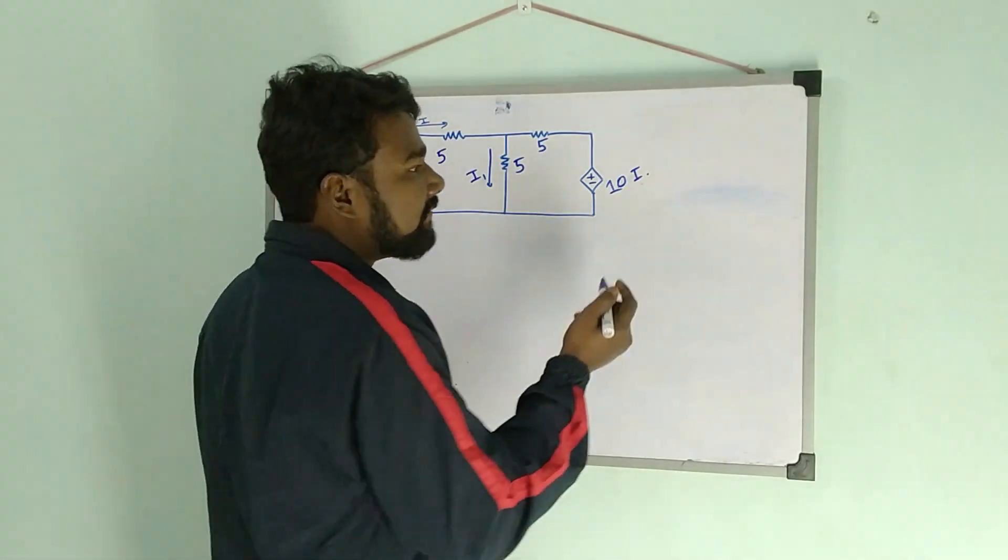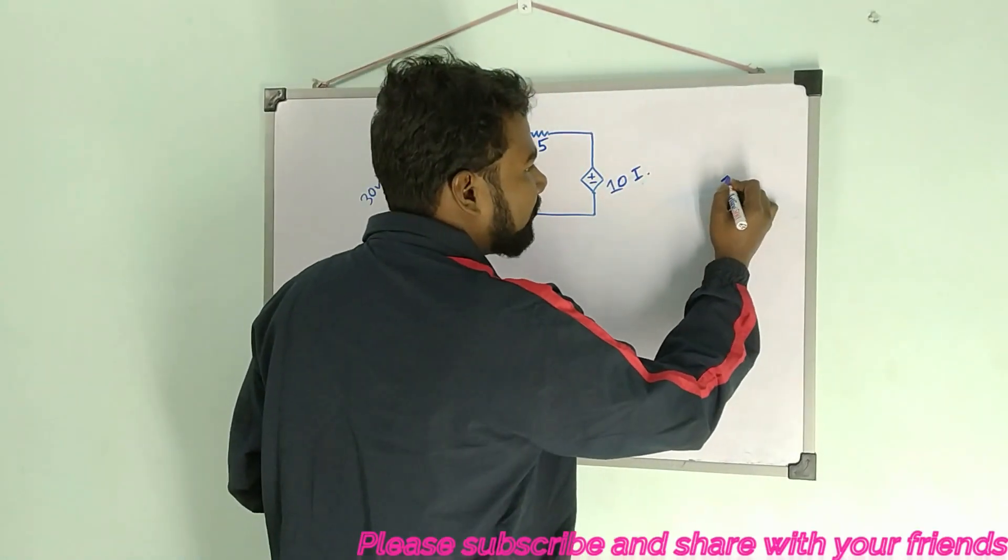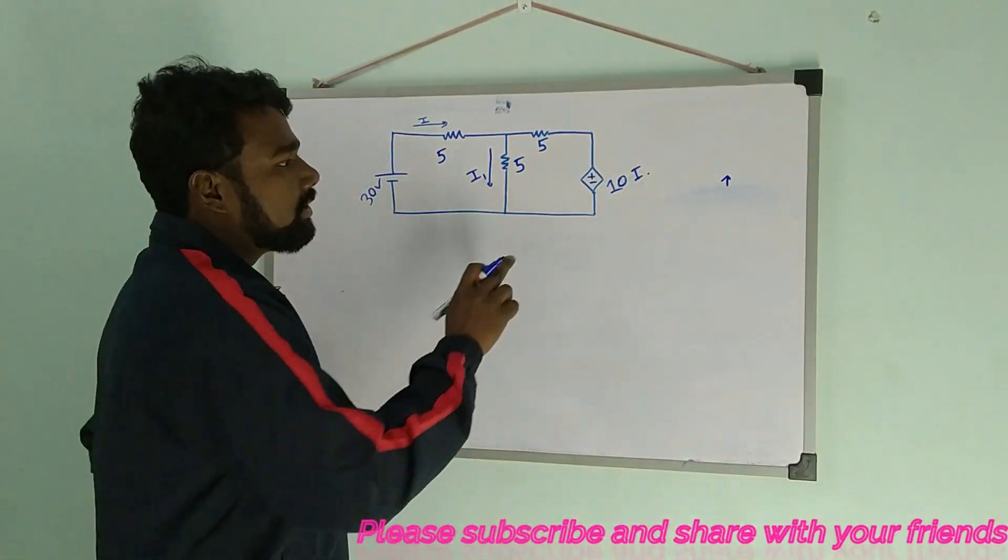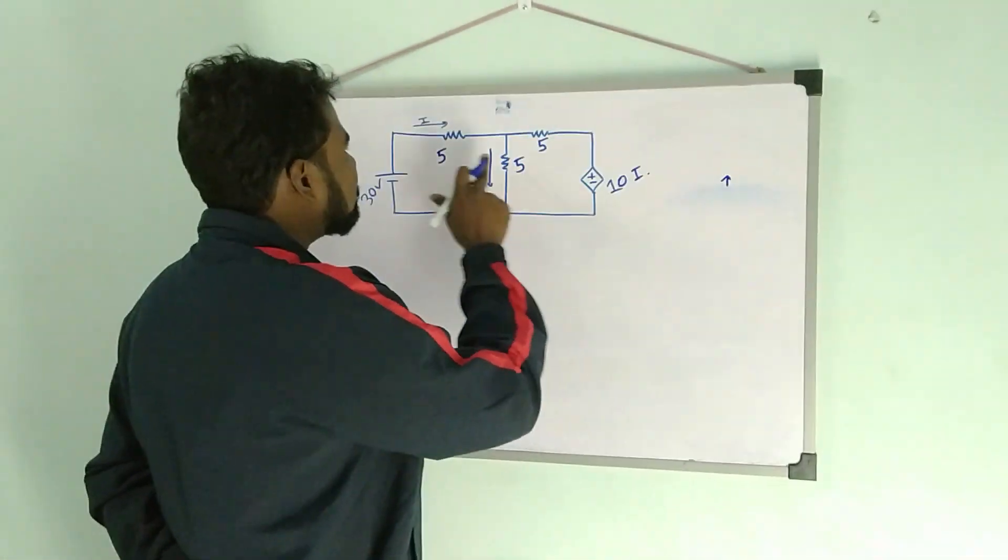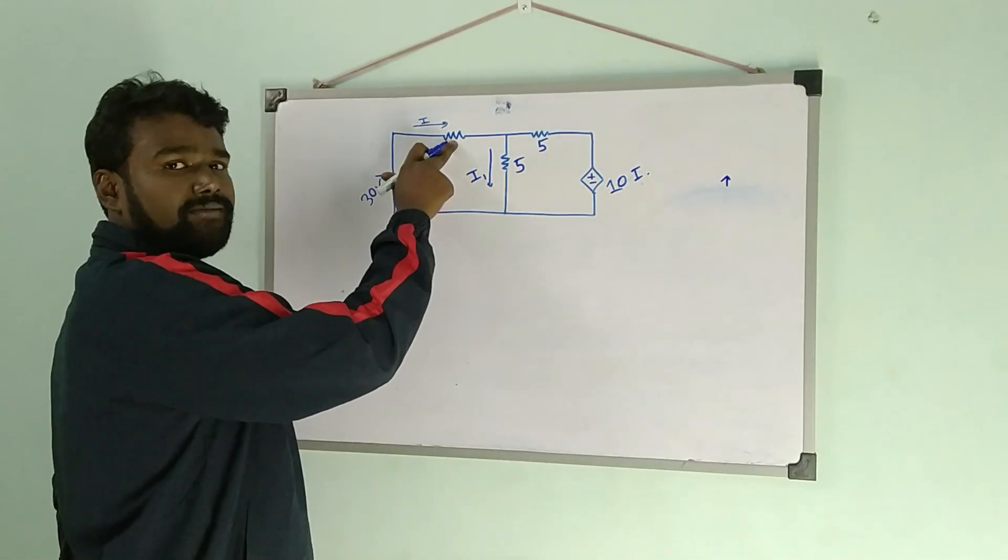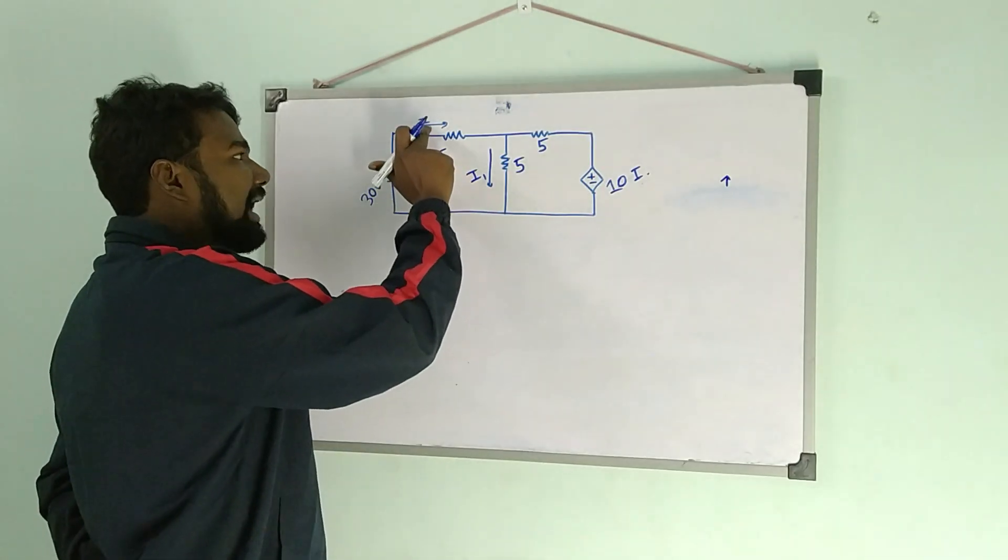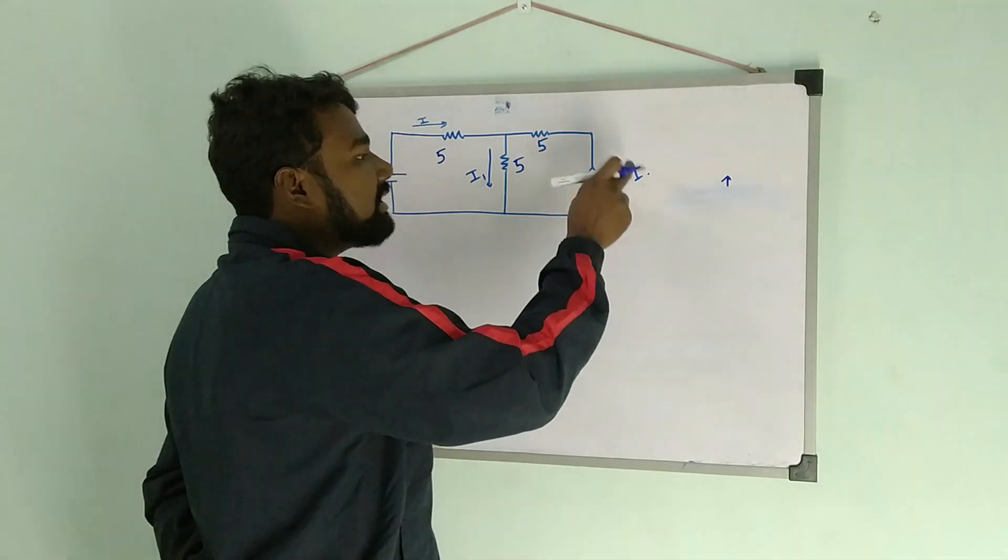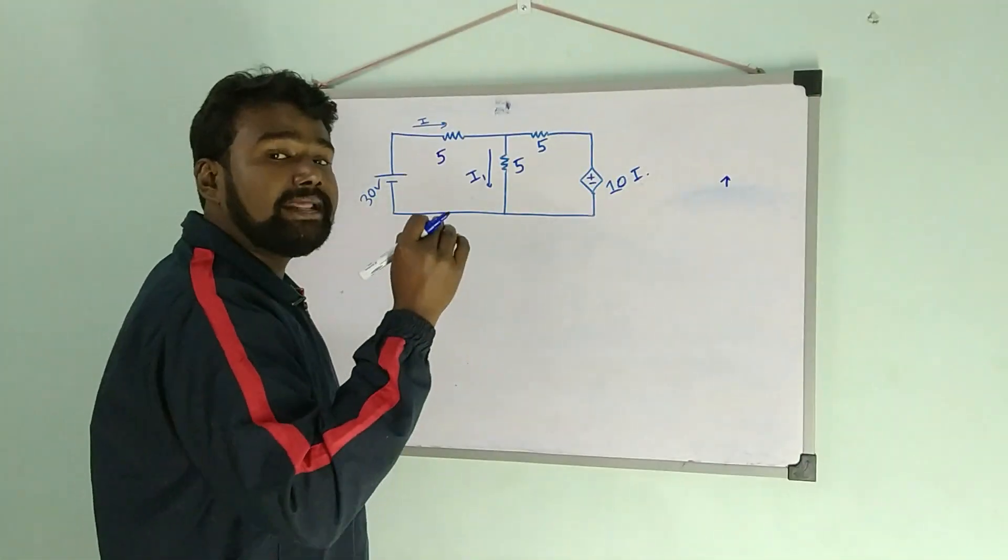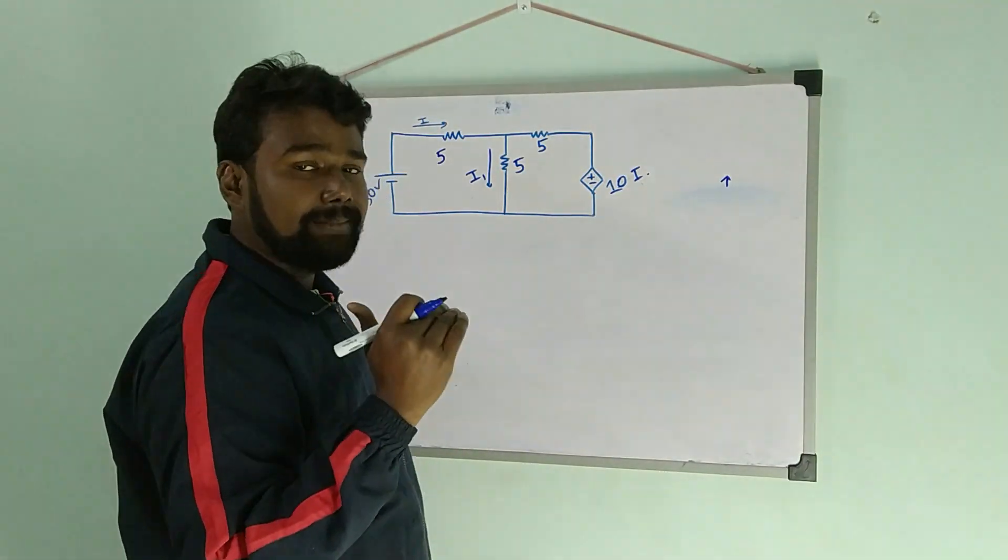The value of this voltage source is 10i. Why is this a voltage source? It has a side with plus minus. If this were a current source, the sign would be an arrow. The value of this voltage source is 10i, and i is the current flowing in this 5 ohm resistance. If this i changes, then the value of this voltage will change. That's why this is called a dependent voltage source—it is dependent on this current i.